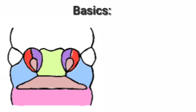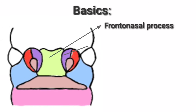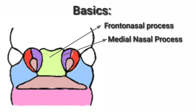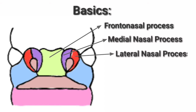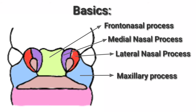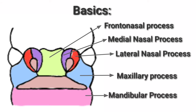Before starting the developmental anomalies of the face, you should know some basic labelings. This is the frontonasal process, medial nasal process, lateral nasal process, maxillary process, mandibular process, and finally the primitive mouth — the stomodeum.